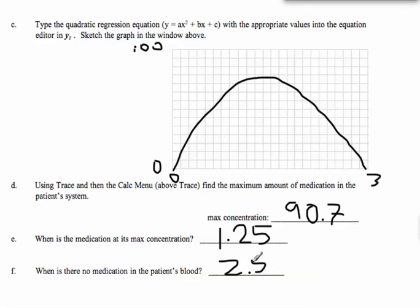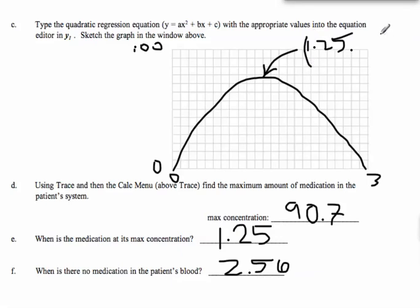So 2 and a half hours later, or a little bit more than that, you're down to zero. It would be great if you labeled these points and just gave the coordinates: the maximum is at 1.25 hours with a concentration of about 90.7 mg. That's how you do it — good luck with the rest of the problems, and we'll move on to the next example in the next video.